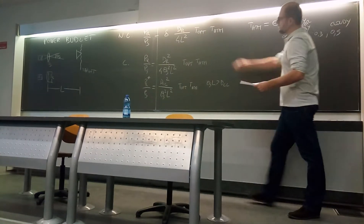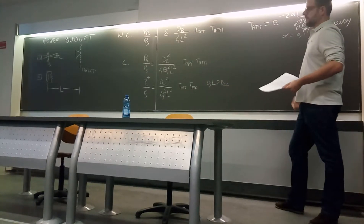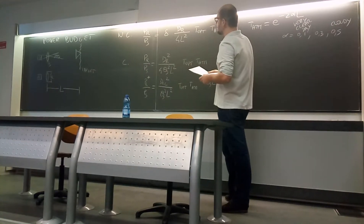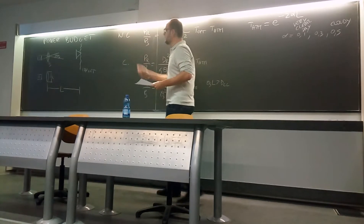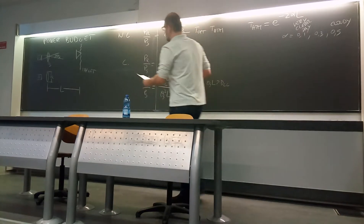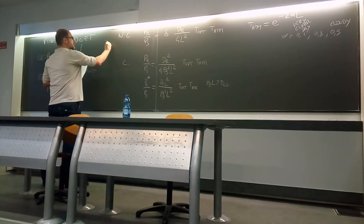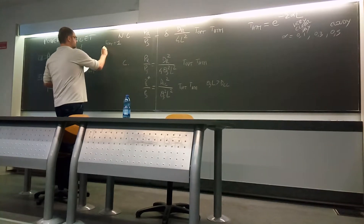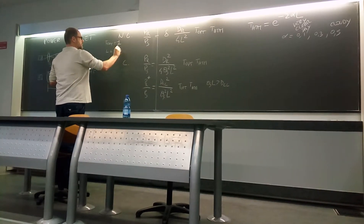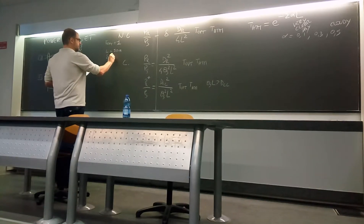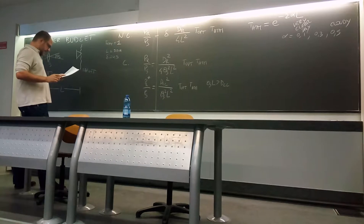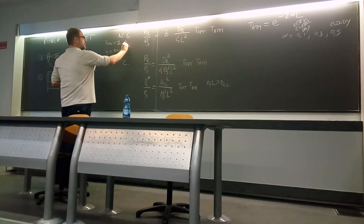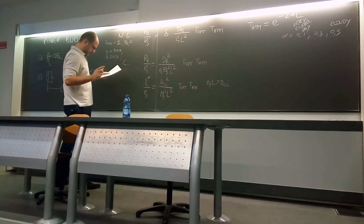These are the three possibilities you will encounter during this course. Now let's start to put some numbers into this formula. For example, let's start with a non-cooperative target, a diffuse one. The hypothesis is that the transmission of the optic is perfect, equal to one. We want to measure a distance equal to 50 meters. The diffusivity of the target is 0.5.